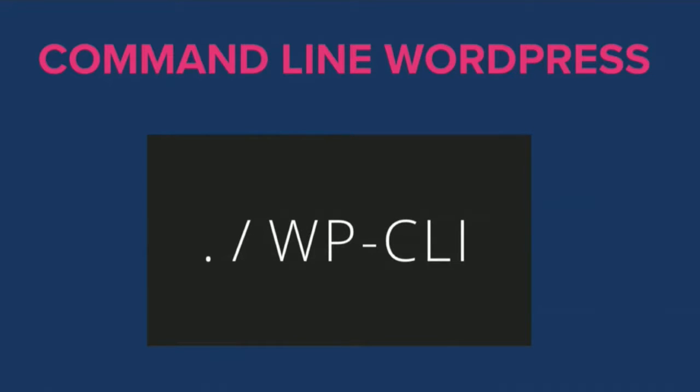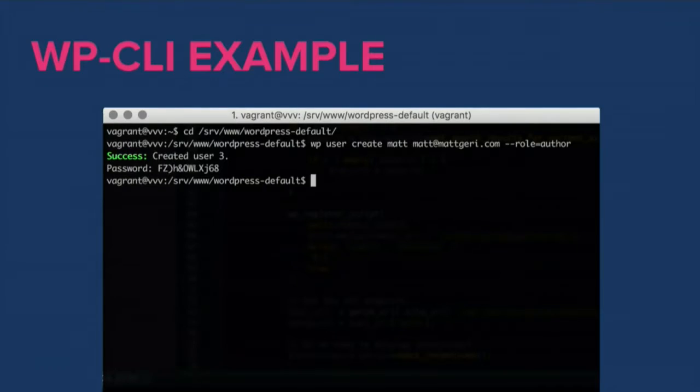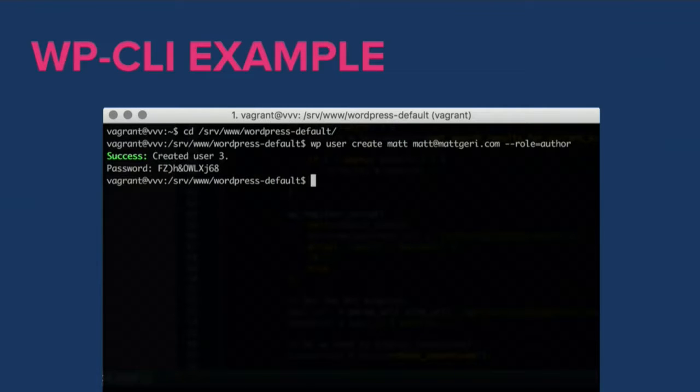Before we finish on the first component, we're going to talk about command line WordPress. This is one of my favorite tools — WP CLI. It's a super useful piece of software that allows you to manage your WordPress installation directly from the command line, so you don't have to go to WP Admin to create a user or a post — you can do it in a single command. Here's an example: I've changed directory to WordPress defaults, where the WordPress files reside, and typed WP user create with an email address, set myself as an author, and it's created that user in WordPress.